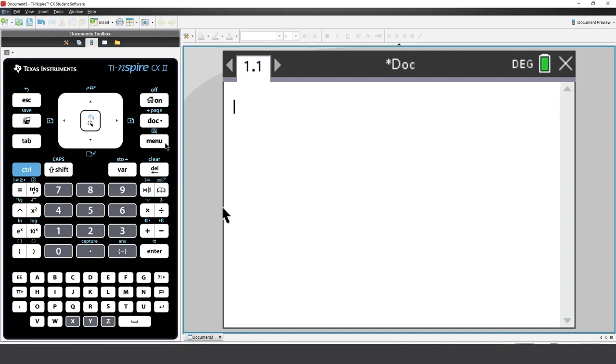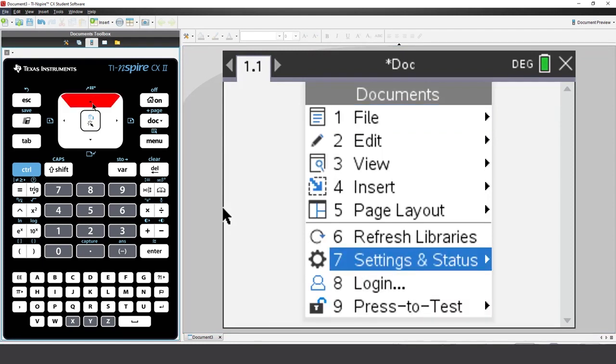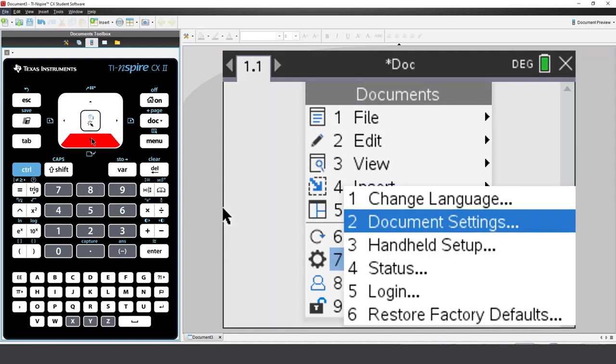Another way to change the mode is through the document settings. Press the document key, select settings and status, then document settings.